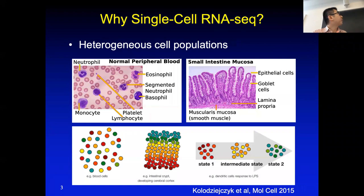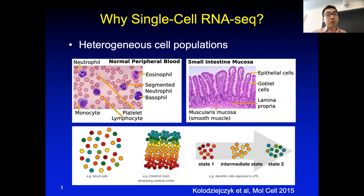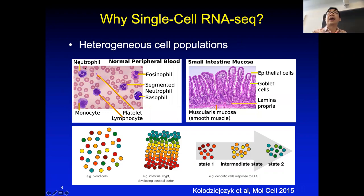First you might ask why we need to do single cell. A simple answer is because of the heterogeneity of the cell populations. As you may see in these histopathology pictures, the left picture is from human blood. There are several different cell types in it — immune cells like monocytes and neutrophils, which can help us fight against viruses and bacteria.